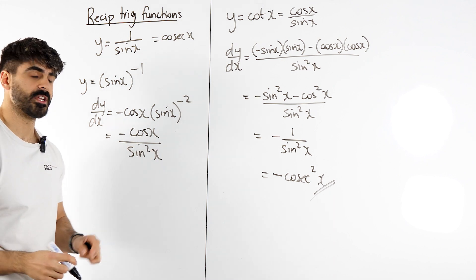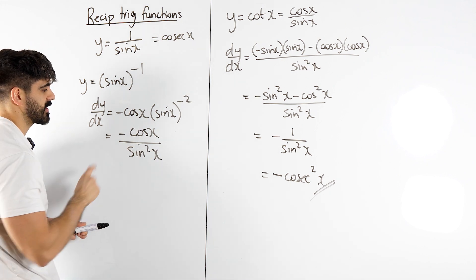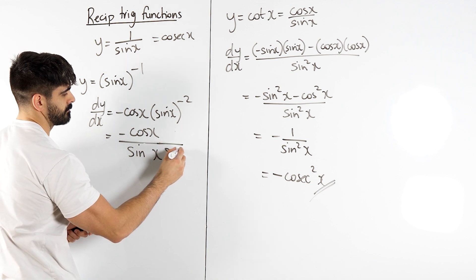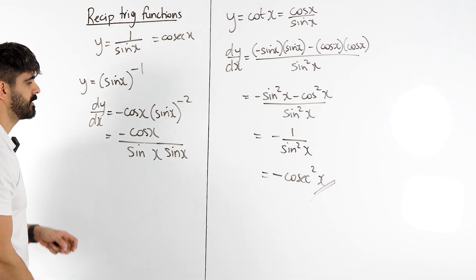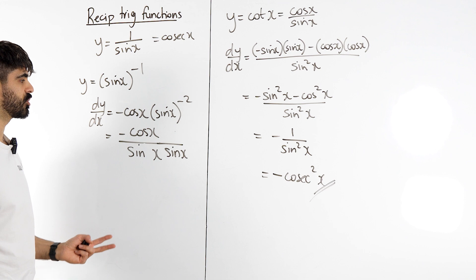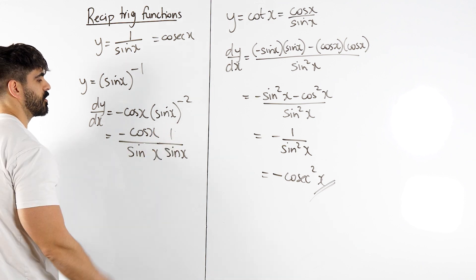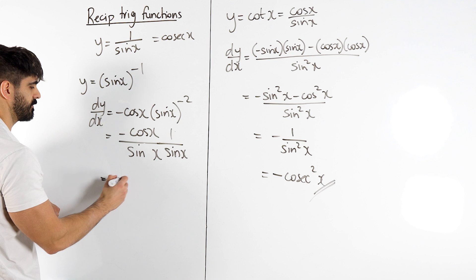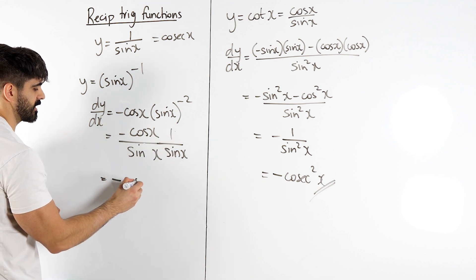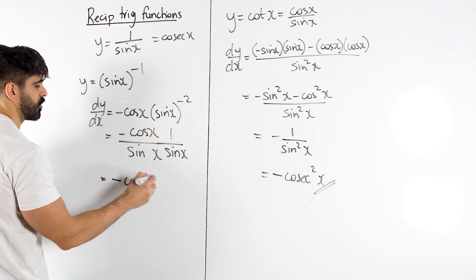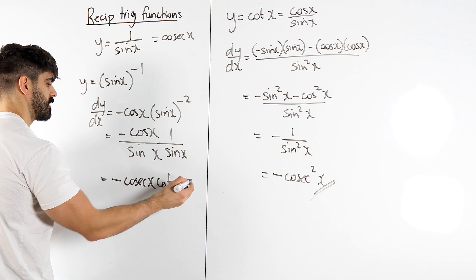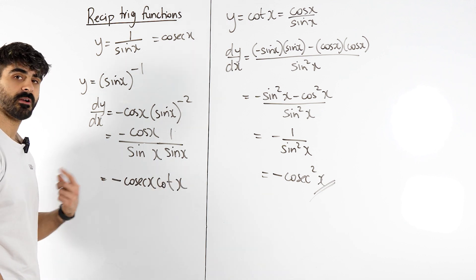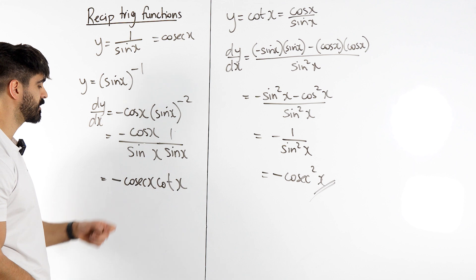This is still not good enough, so we rewrite sin squared as sin x times sin x. Can you see the cos over sin being cot, and here we have the one over sin. So you rewrite it as negative, one over sin is cosec, and cos over sin is cot. So cosec differentiates to minus cosec cot. Remember anything that involves cosec brings out a negative.